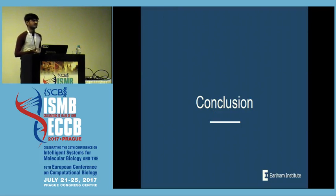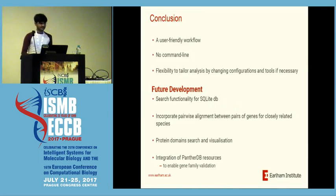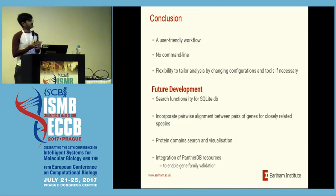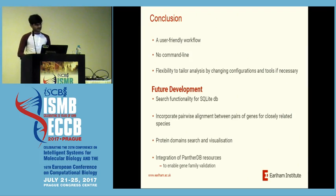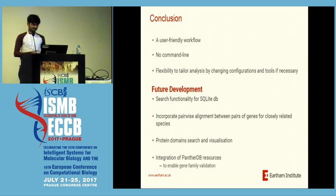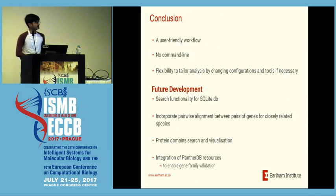In conclusion, we managed to build a very user-friendly workflow within Galaxy — you don't need any command line, and you can customize and configure each and every tool. If you want, you can also replace tools: if you find a better tool than BLAST, T-Coffee, or HCluster SG, you can easily swap it in. What we want to do next is add search functionality within the database, since you may have hundreds of gene families from your data. We also want to add pairwise alignment for each gene in the family, which will help us find one-to-one orthologs, one-to-many orthologs, and paralogs. Additionally, we want to use SMART from EMBL to find protein domains, and integrate PantherDB for validation of the gene families.